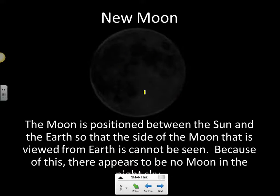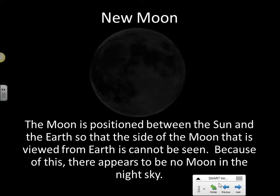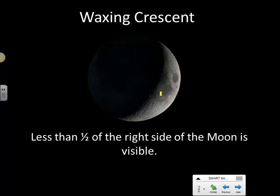The new moon phase is when the non-illuminated part of the moon is facing Earth — the moon is directly between the Earth and the sun, so the illuminated part is on the other side and the light isn't reflecting toward Earth. As the moon continues to orbit, we see more of an illuminated part of the moon. Since the right side is illuminated it's waxing, and since it's less than half illuminated it's a crescent.